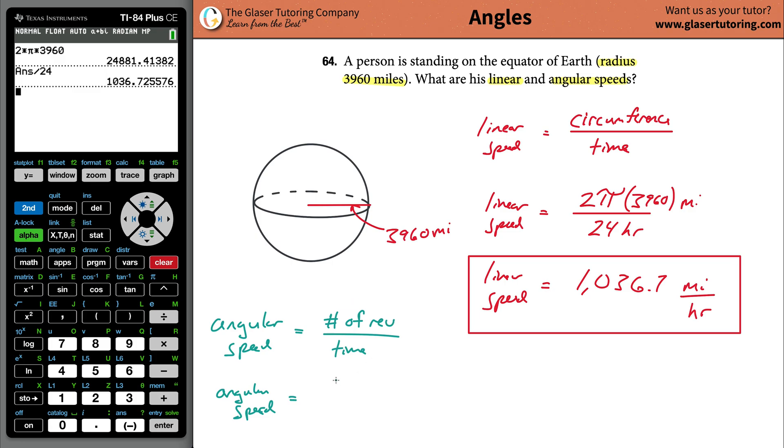Anyway, number of revolutions. So you can do it like this. You can say, well, the Earth makes one revolution every single... one hour? Oh wait, one day. Sorry, I got confused with the days and the hours. Oh my god, it's getting late. So you could say that the angular speed of the Earth is one revolution per day. That would be acceptable.